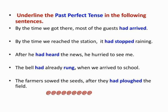The bell had already rung when we arrived at the school. The first action is ringing the bell — 'had rung' in past perfect. The second action is our arrival — 'arrived' in simple past. The bell had already rung when we arrived at the school.